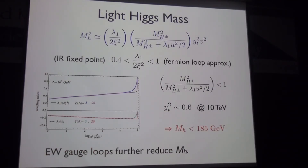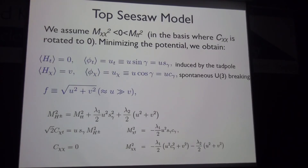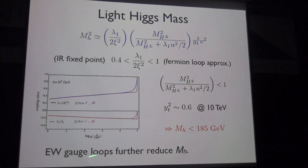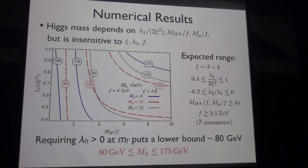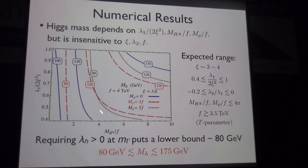The Higgs boson mass depends on a factor related to the quartic coupling over twice the Yukawa squared — equal to one in the fermion loop approximation — times V times the top Yukawa. An electroweak gauge loop contribution always reduces the Higgs mass. A rough upper bound of about 180 GeV is found. A detailed calculation over the three-parameter space shows that 125 GeV sits comfortably in the middle of the allowed region.